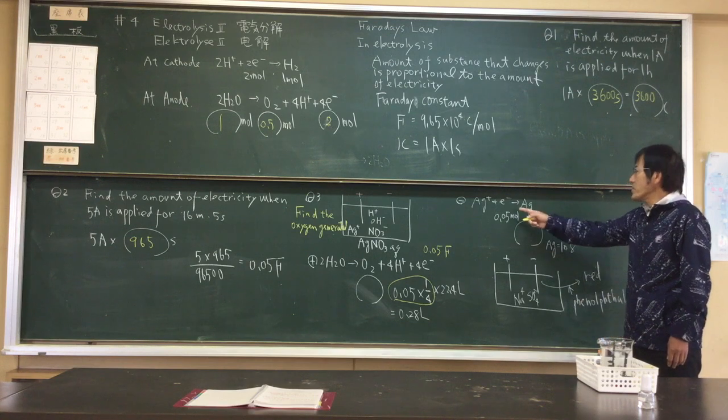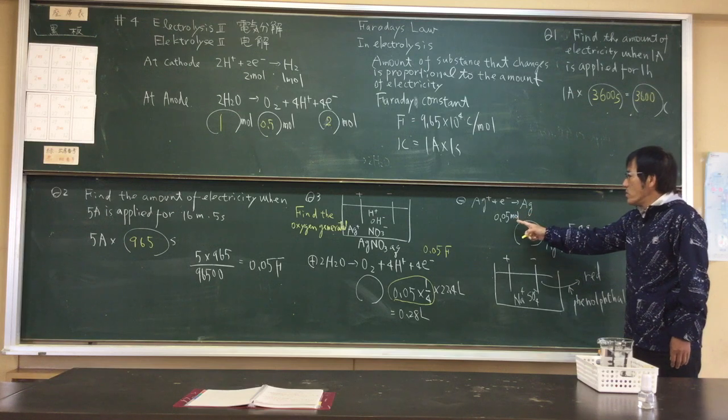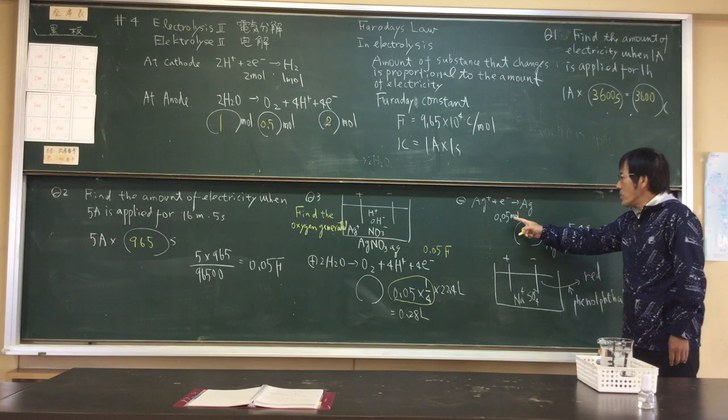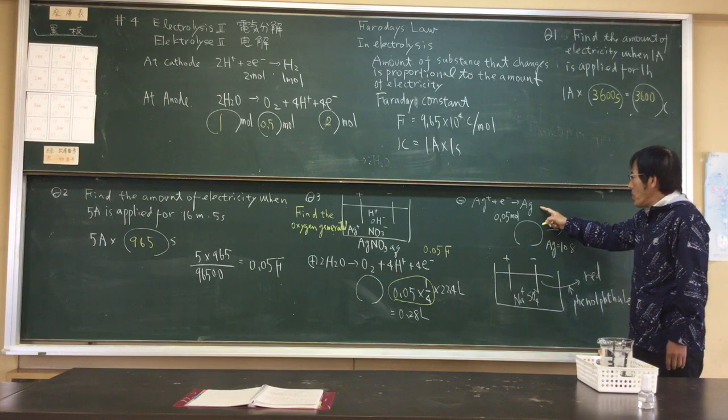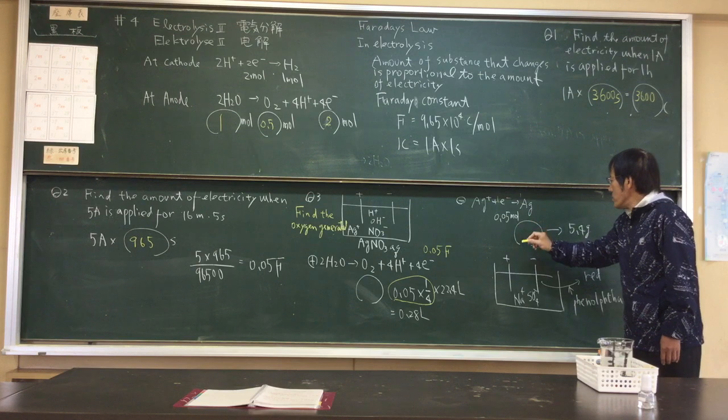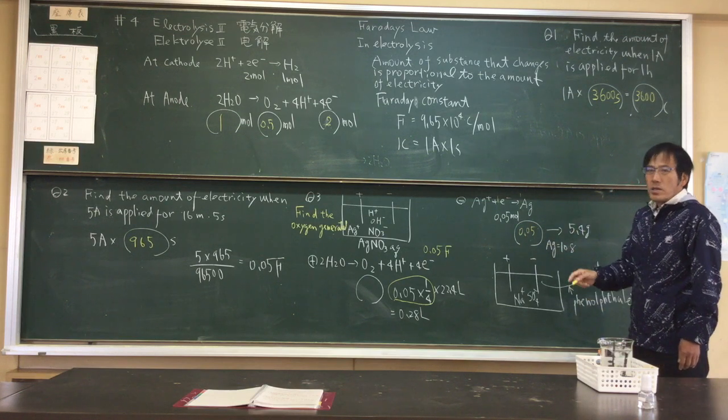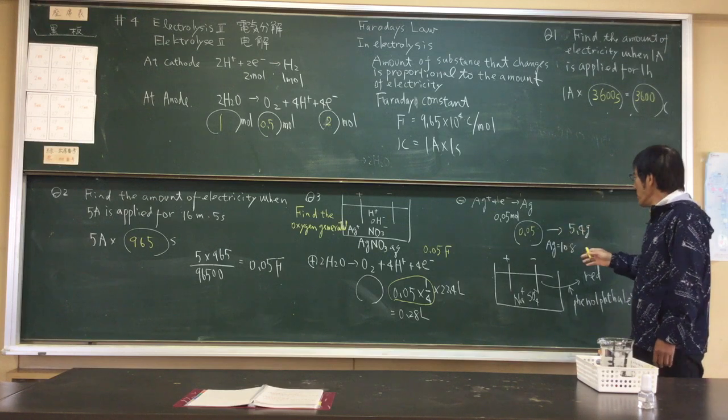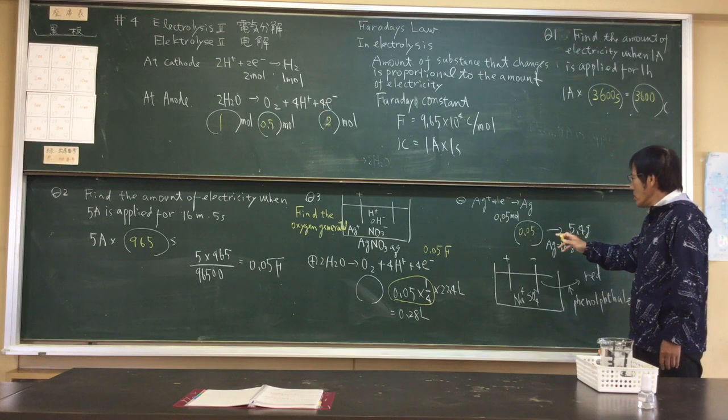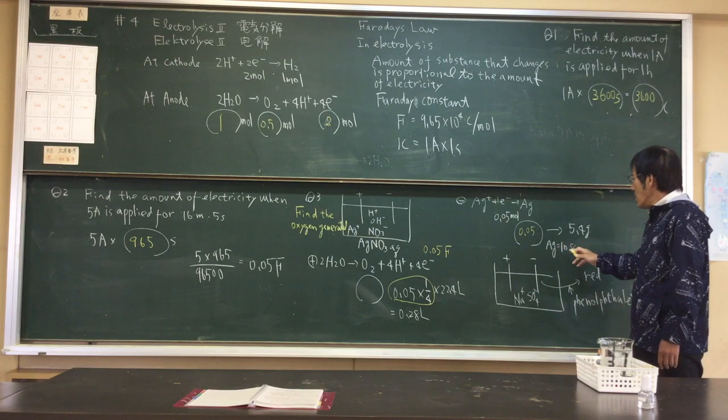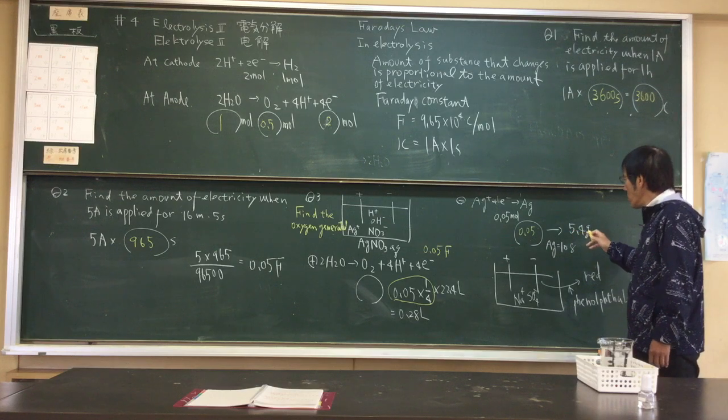Equal 0.28 L. Silver. In 0.05 mola electron loads, silver 0.05 mola is produced. This atomic weight of silver, atomic weight of silver, 108. Plus 5.4 g.